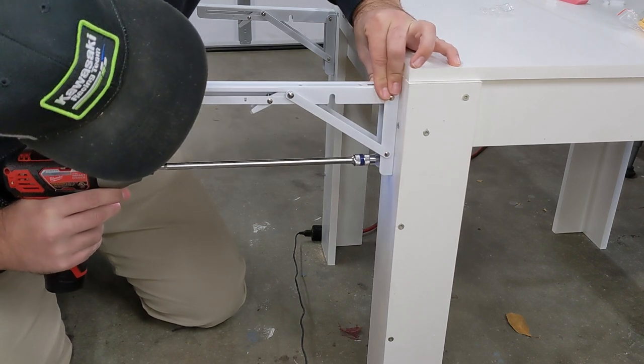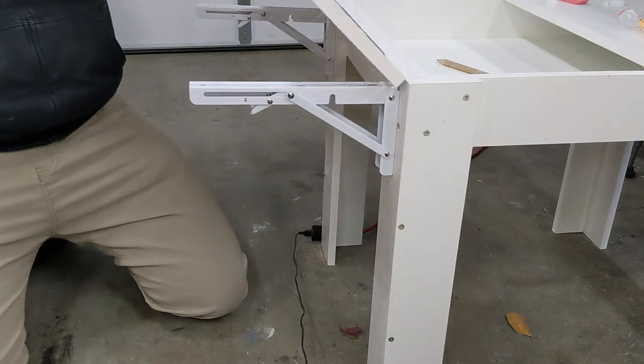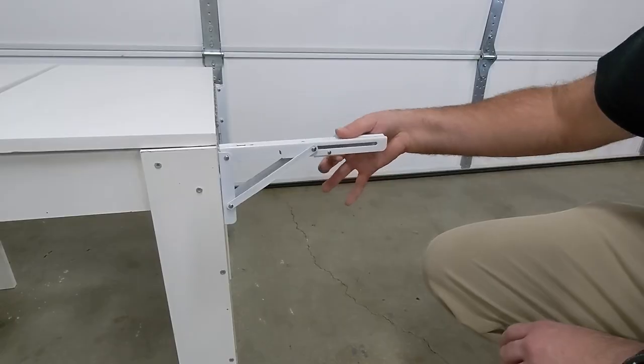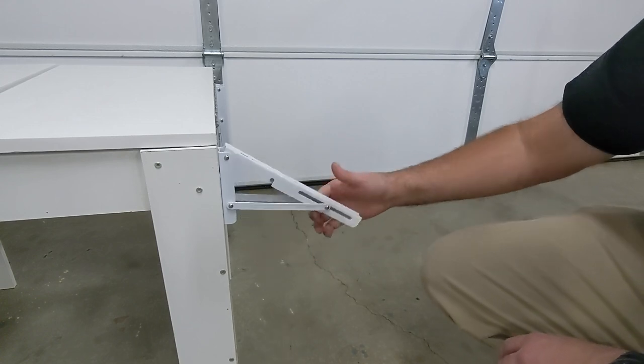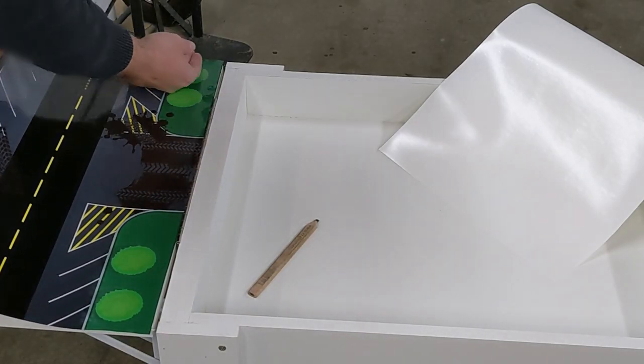So I ended up using drywall anchors to fill the hole and then put the screws into the drywall anchors. But they hold the lid open just fine so the kids can play on it and use it as an additional play surface to the table and they just go up and down like this.